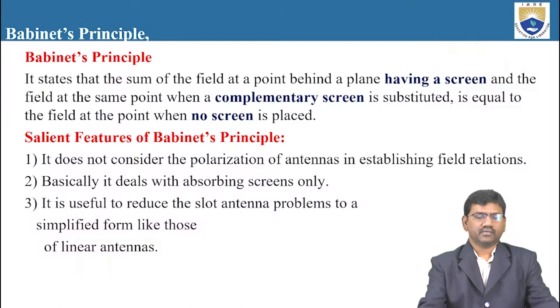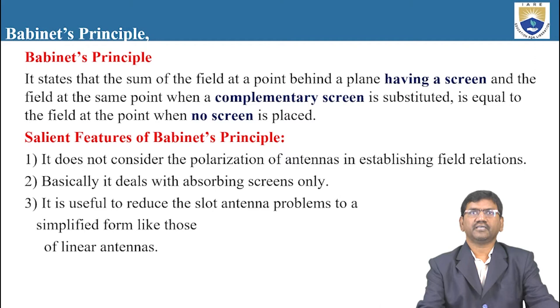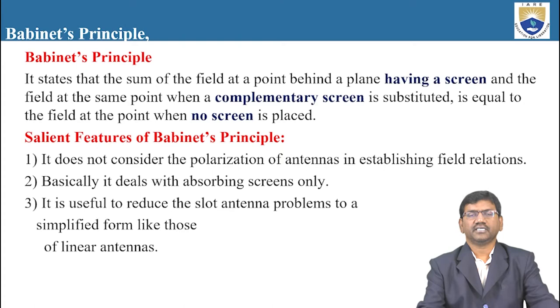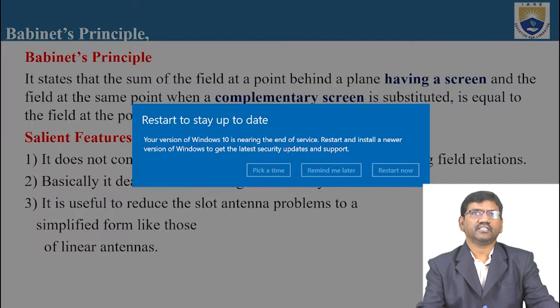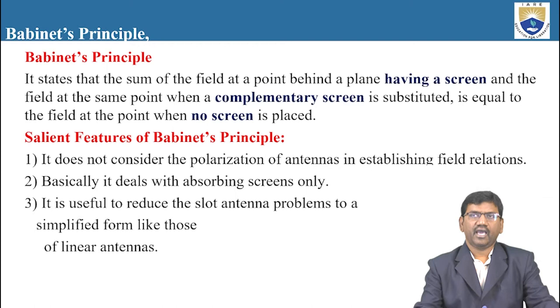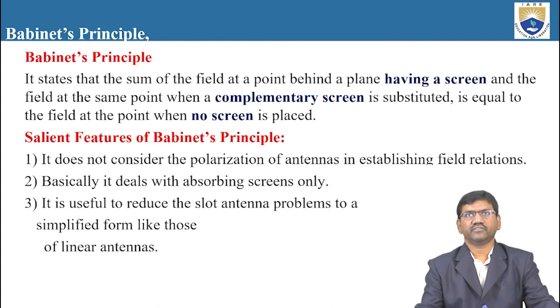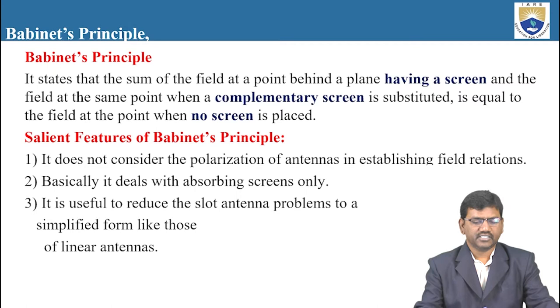What actually is Babinet's Principle? How is Babinet's Principle applied for antennas? What are the applications, advantages, and disadvantages of this principle? According to Babinet's Principle, it states that the sum of the field at a point behind a plane having a screen, and the field at the same point when a complementary screen is substituted, is equal to the field at the point when no screen is placed.